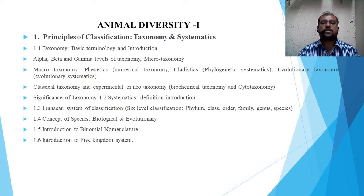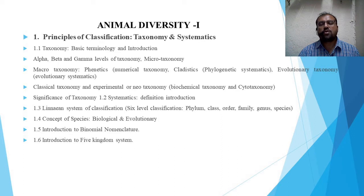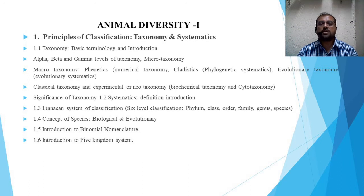In animal diversity first we will have to study seven different topics. The first topic is principles of classification, that is taxonomy and systematics. This animal diversity first paper deals with the systematic arrangement and classification of animals on the basis of their characters — morphological, anatomical, physiological, and embryological — and all the systematic arrangements done under taxonomy, which deals with the classification of living organisms.